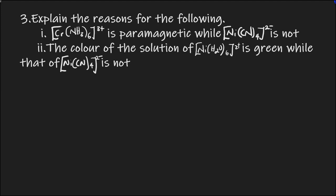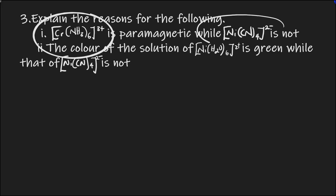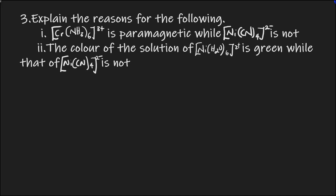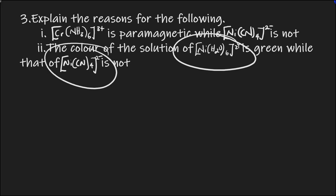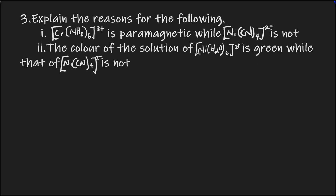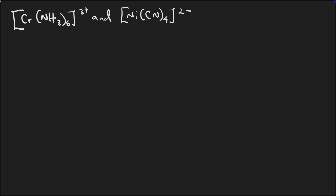The third question says: explain the reason for the following — this complex is paramagnetic while the other is not, and the color of the solution of one complex is green while the solution of the other is not. I'm going to use crystal field theory to explain this. Let's solve the first part about paramagnetism. The first thing to do is calculate the oxidation state of both complexes.